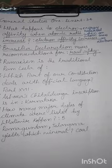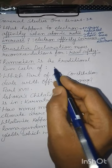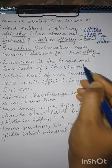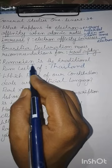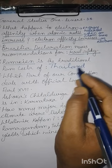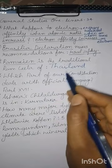Rama Kien is the traditional Ramlila of Thailand. रामा कियन जो कि संस्कृत के शब्द 'राम आख्यान' से आया है, थाईलैंड की पारंपरिक राम लीला को रामा कियन कहते हैं।